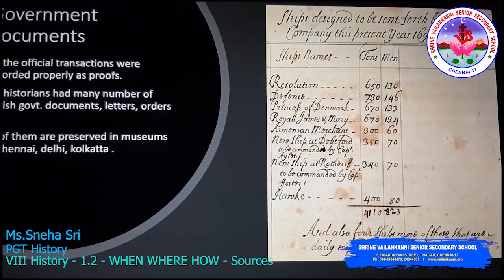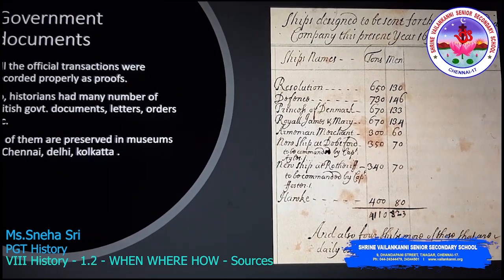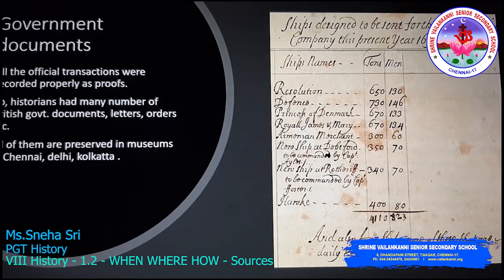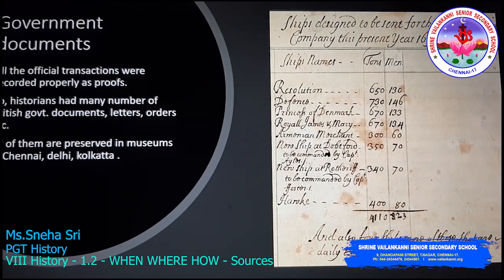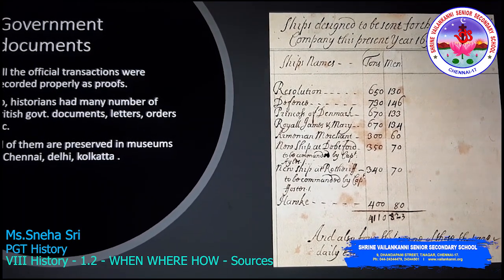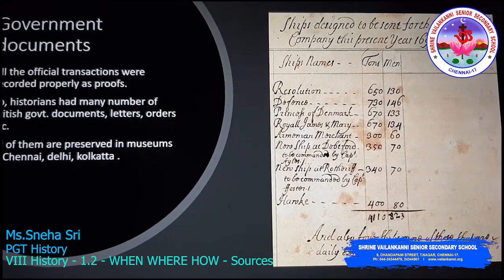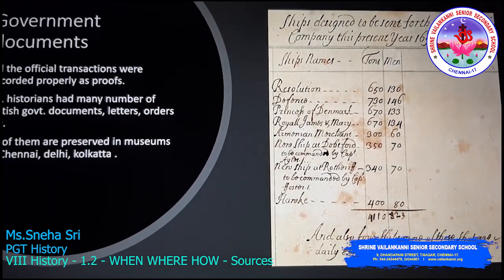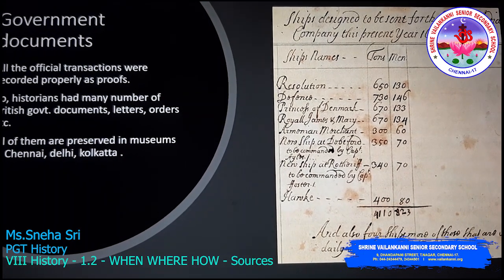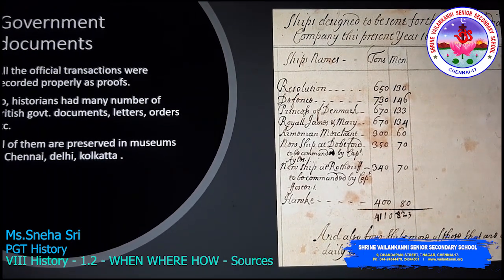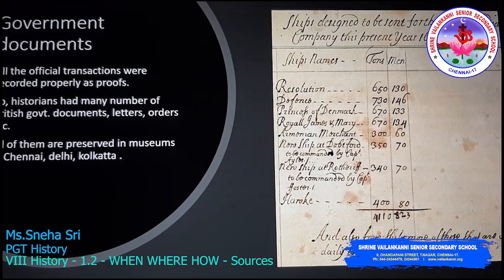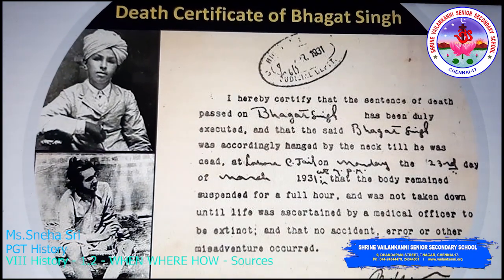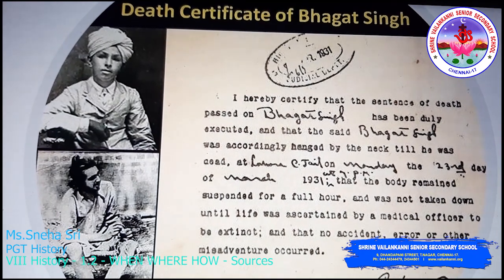On the right-hand side you will be able to see a document — 'Ships designed to be sent forth by the English East India Company,' dated 1692. It lists the ship names, the weight they should carry, and the number of people accompanying them, as well as ships exported from India. This document displays information regarding ships used by the English East India Company.